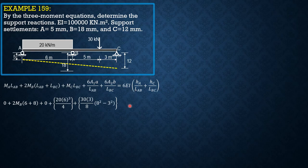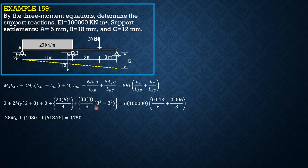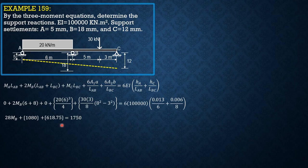Then equals 6 × 100,000(HA is 13 mm or 0.013/6, HC is 6 mm above the horizontal line through B or 0.006 m/8). Simplifying, this is 28MB + 1080 plus this value 618.75, then equals the right side is 1750.